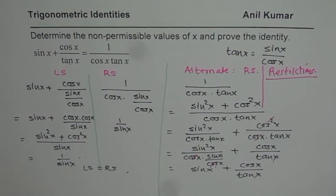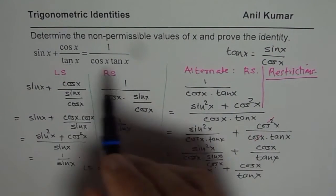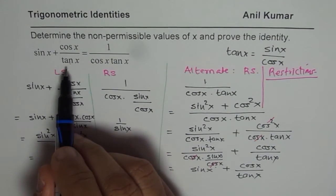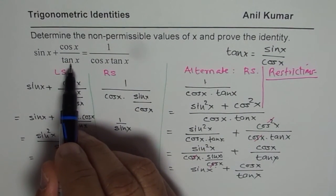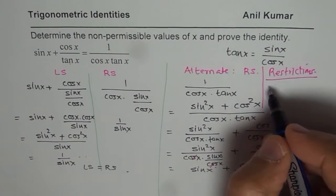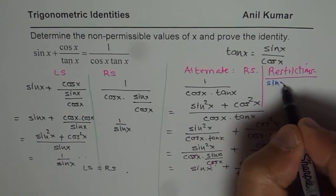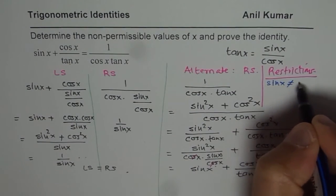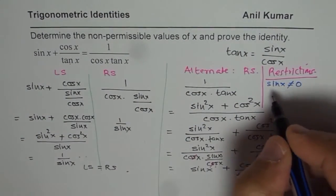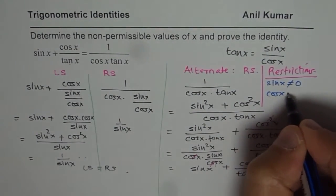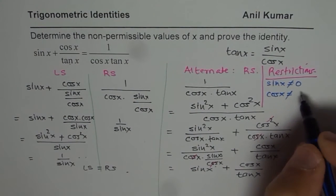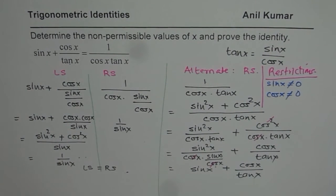So the first restriction I'll list is for tan x. So tan x is sin over cos. So tan x cannot be 0 means sin x is not equal to 0, and cos x is also not equal to 0.